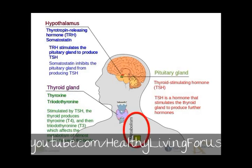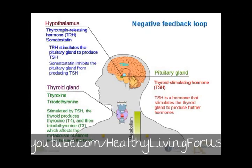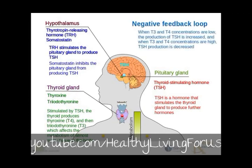Let's make a little animation to illustrate this. Take note of our little bar graph down here at the bottom, indicating the rate of metabolism in an imagined tissue — the higher the bar, the higher the metabolism. The hypothalamus releases TRH, which acts on the pituitary gland, causing the production of TSH, which in turn stimulates the thyroid to produce T4 and T3. This affects the metabolism of almost every tissue in the body, and as you can see, our little graph has increased. We must also note that there is a negative feedback loop: when T3 and T4 concentrations are low, TSH production is increased, and when T3 and T4 concentrations are high, TSH production is decreased.